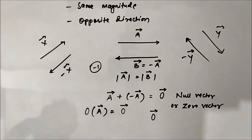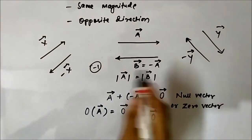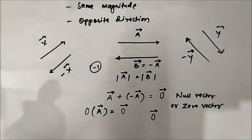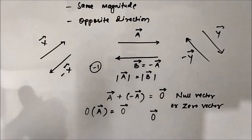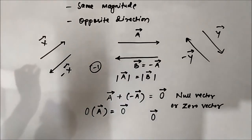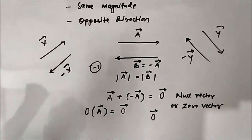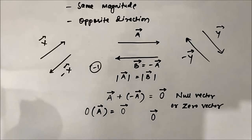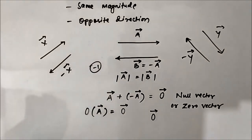Examples of zero vectors include the position vector at the origin, where the 0i-cap, 0j-cap, and 0k-cap components are all zero. For a stationary object, the velocity vector is a zero vector since there is no displacement. Also, the acceleration vector for an object moving with uniform velocity is a zero vector.